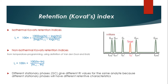For isothermal conditions, the Kovats Retention Index is: I = 100n + 100 × (log tx − log tn) / (log t(n+1) − log tn). For non-isothermal conditions from temperature programming, using the definition of Van Den Dool and Kratz: I = 100n + 100 × (tx − tn) / (t(n+1) − tn). Different stationary phases in GC give different RI values for the same analyte because different stationary phases have different retentive characteristics.